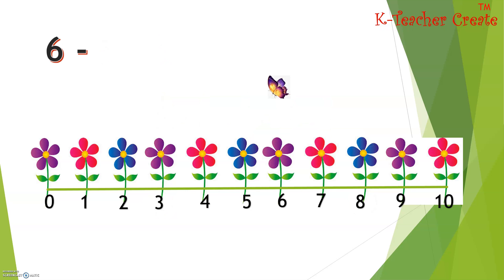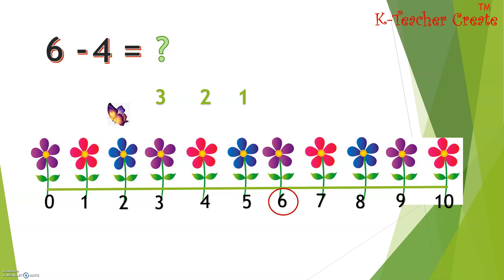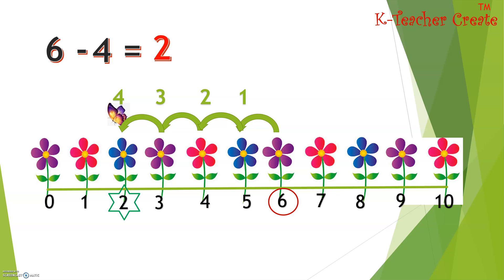Six minus four equals. First, circle the bigger number, which is six. Then we count backwards four times: one, two, three, four. And the answer is two.